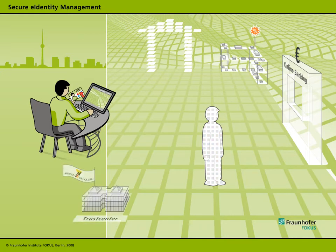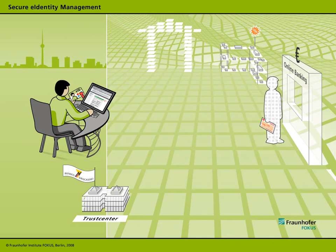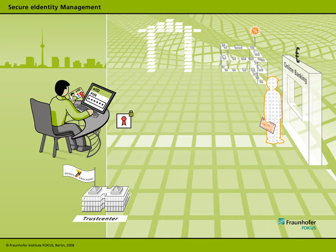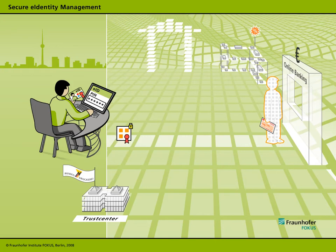Only a trustworthy instance — the identity provider — will be granted access to our respective identity and the required data it contains, providing safe authentication. For instance, if you want to open an online bank account, the provider will ask for personal information such as your name and date of birth. By keying in his user PIN, the customer authorizes the identity provider to read selected personal data from his electronic identity document. The identity provider then draws up a certificate of authentication for the selected data, which is sent with proof of its genuineness to the customer, who then forwards it to the bank, which accepts it and opens the account.